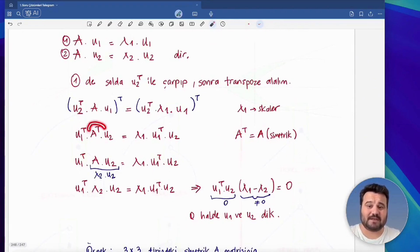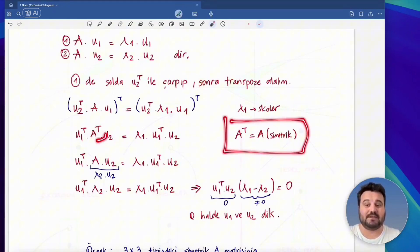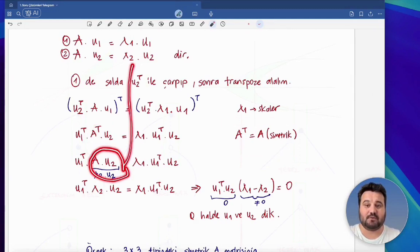Then, for the transpose of A times u2, I will use this. Since a symmetric matrix is symmetric with respect to the diagonal, its transpose is equal to itself. Well, in this case, I can write A instead. When I write A, this forms here. Look, A times u2. And what is this equal to? Lambda 2 times u2. Write this here. We wrote this here.